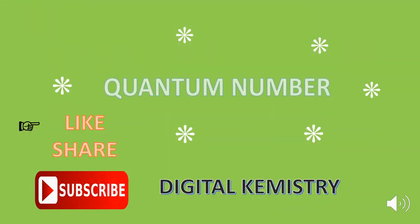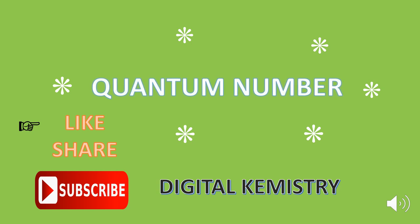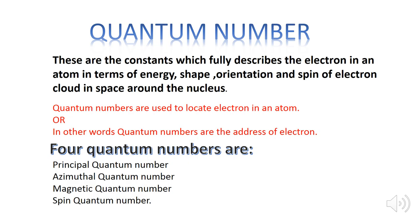This video is about the quantum numbers. Let's start finding the address of the electron by using the quantum numbers. The quantum numbers are the constants which fully describe the electron in an atom in terms of energy, shape, orientation, and the spin of the electron cloud in the space around the nucleus. Simply, quantum numbers are used to locate an electron in an atom — they are the address of the electron.